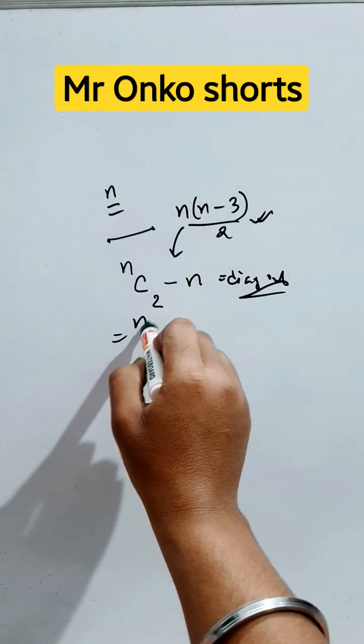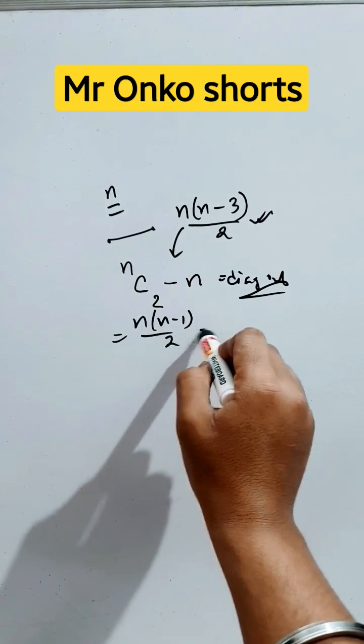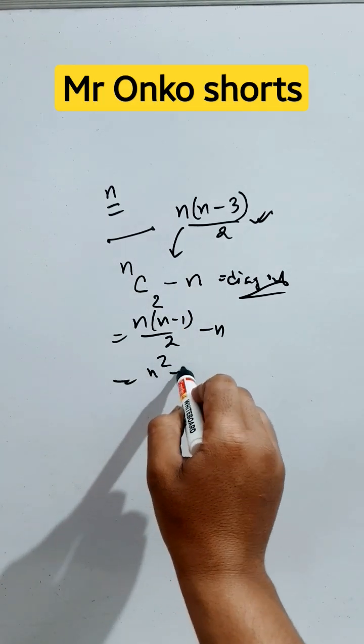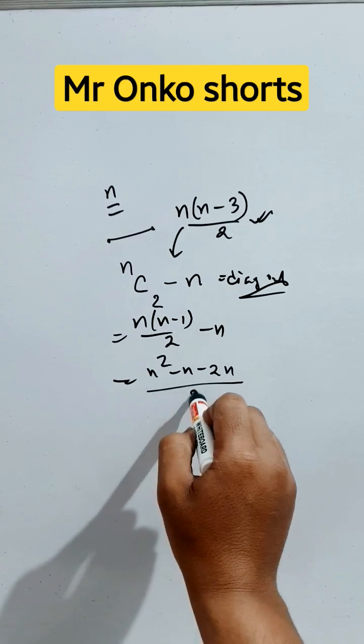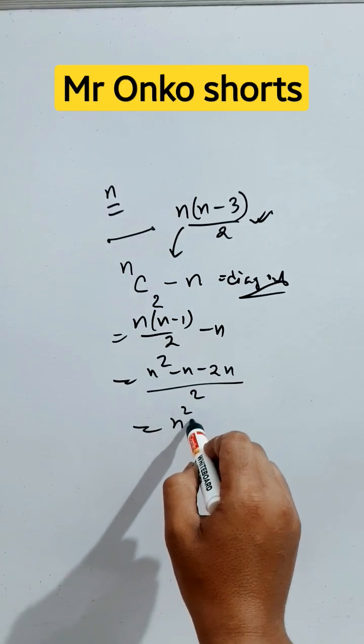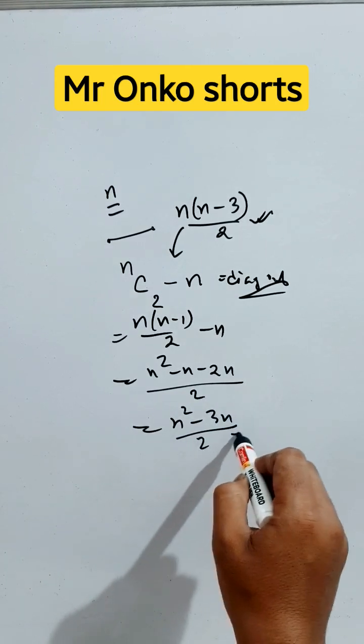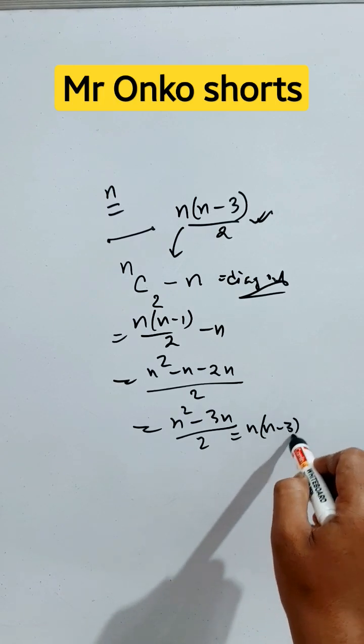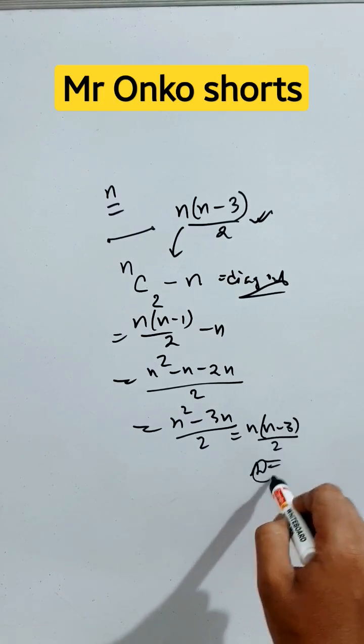Here nC2 is n(n-1)/2 minus n, so it is (n²-n-2n)/2. Here it is (n²-3n)/2. If we take n common, then it is n(n-3)/2. Thus it can be proved.